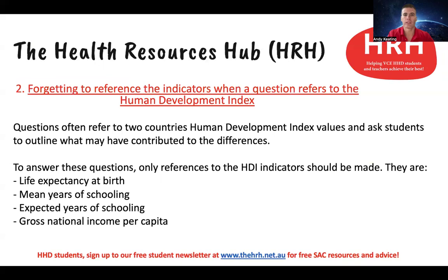Number two is forgetting to reference the indicators when a question refers to the human development index. The human development index is made up of three dimensions and four indicators, and data from different countries are combined into a calculation that produces a value between zero and one, which is the HDI. Often you'll see questions that refer to perhaps two countries with different HDI values and ask students to outline what might have contributed to these differences. Remember to always refer back to one or more of the indicators, because it's those indicator values that are combined into the calculation. Some students forget to refer back to specific indicators and that's where they lose marks. You can see those four indicators on screen — go back and have a look at a previous video for more detailed examples.